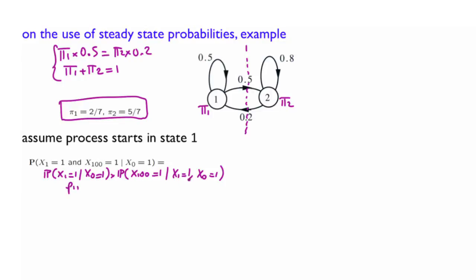How about the second probability? Because of the Markov property, that information is irrelevant. And so that probability is R11 in 99 steps. Now, 99 is possibly a big number. And so we approximate this quantity, and we are going to use the steady-state probability of state 1 for doing that. And that gives us an approximation, P11 times pi of 1, which then is 0.5 times 2 over 7.